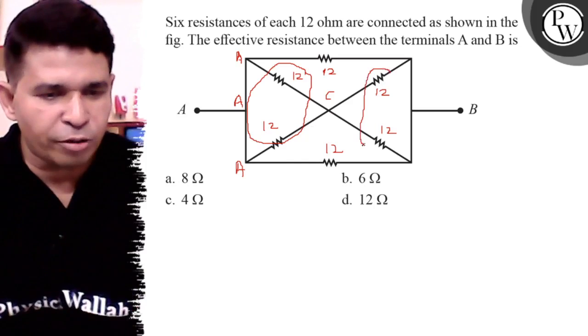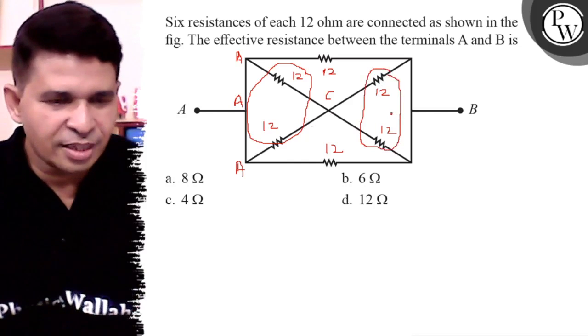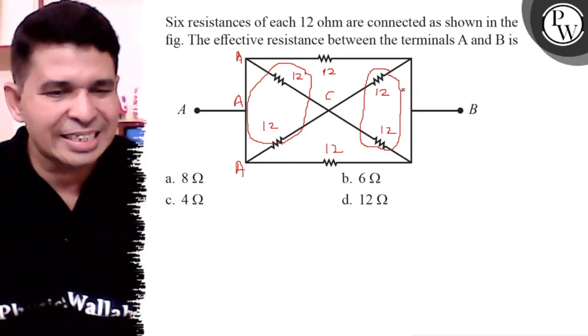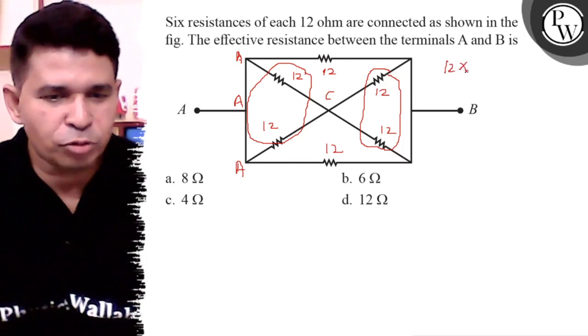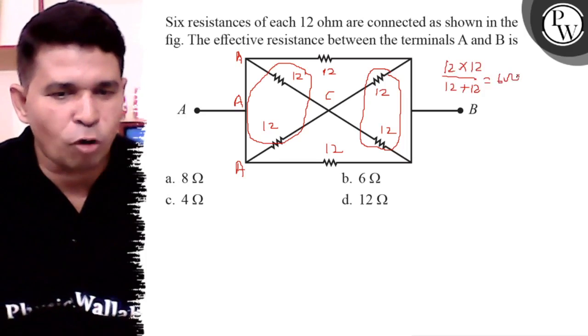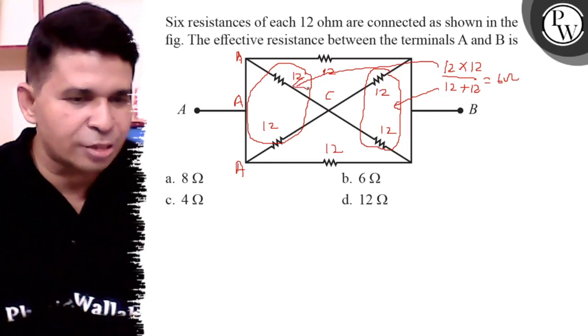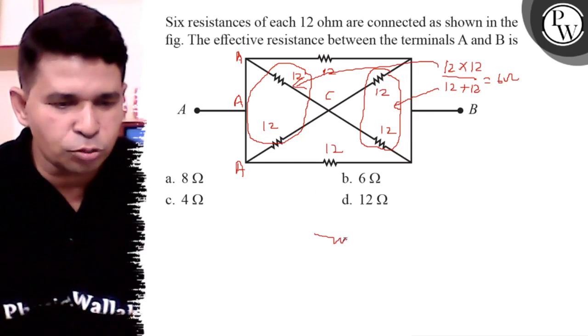So 12, 12 ohm gives 6 ohm. 12 into 12 upon 12 plus 12 is 6 ohm equivalent resistance. It is also 6 ohm, it is also 6 ohm. These two 6, 6 ohm are in series.